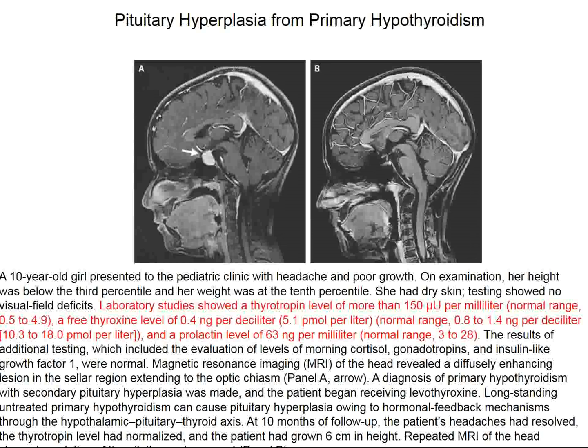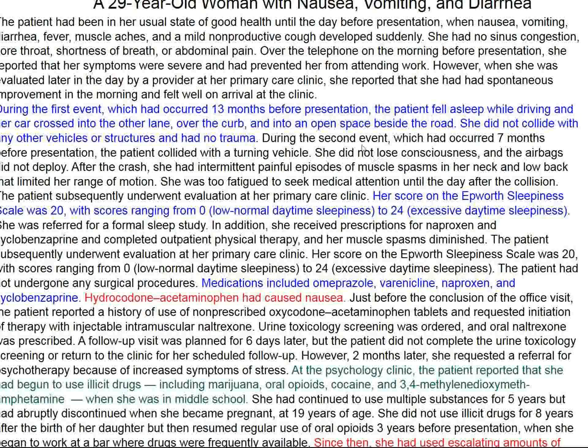If the pituitary gland is driven by failure of a secondary gland such as the thyroid, the pituitary can increase in size considerably, and the optic chiasma can be involved, causing visual field cuts. This patient had severe hypothyroidism, and with treatment of the primary problem, pituitary hyperplasia regressed appropriately, as seen on MRI.